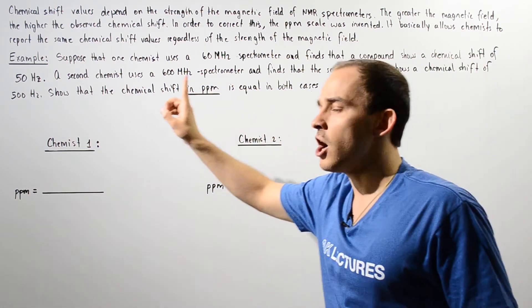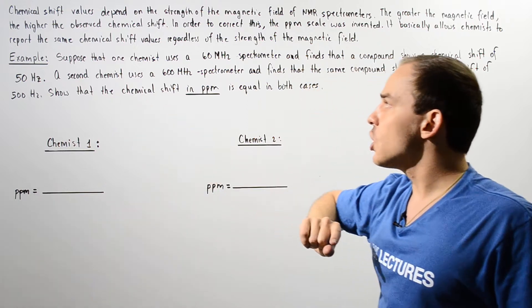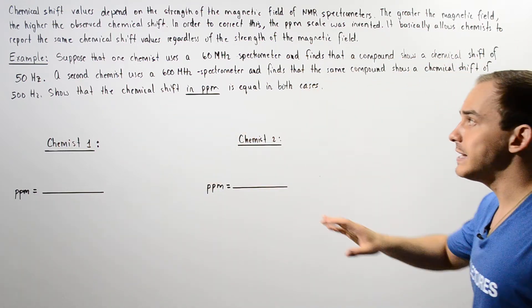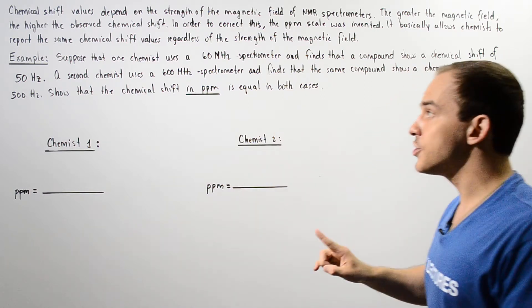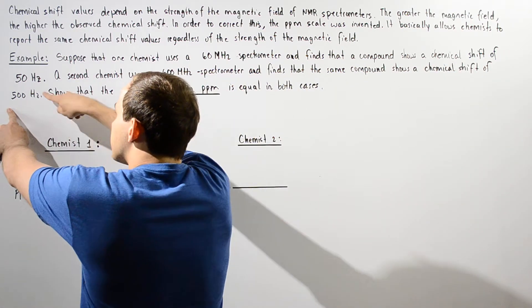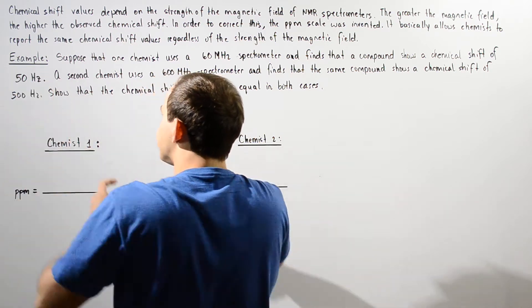So basically suppose that one chemist uses a 60 megahertz spectrometer and finds that the same compound shows a chemical shift of 500 hertz. Show that the chemical shift given in parts per million is exactly the same in both cases, even though the actual chemical shift given in hertz is not the same.